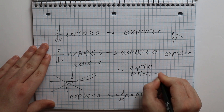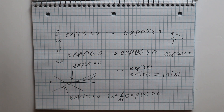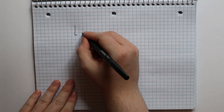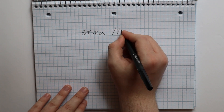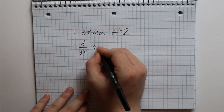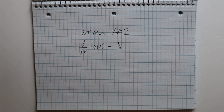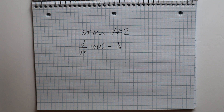We will call this inverse the natural log of x. For lemma number two, I will prove that the derivative of the natural log of x is equal to 1 divided by x, by implicit differentiation. This is an incredibly simple proof, so I won't talk you all the way through it, but I will still leave the proof on the screen. If you think you can prove it before me, please feel free to pause the video and try it out for yourself.